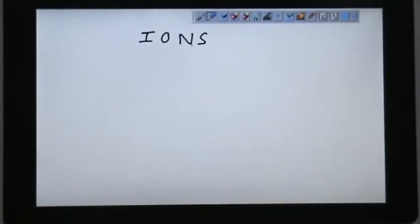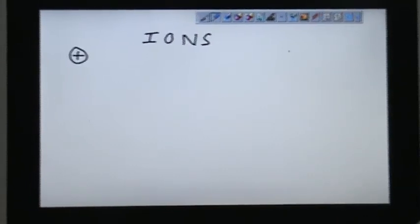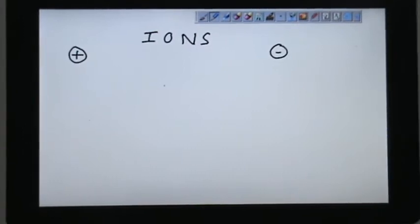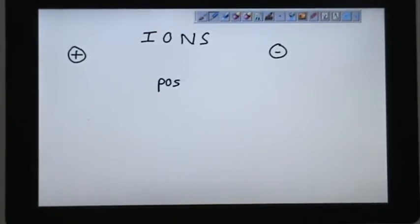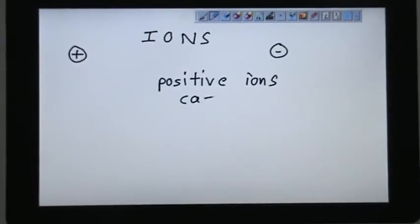Ions. We have two types of ions. One is positive ion and another one is negative ion. Let's consider positive ion first. Positive ions have a name. Their names are called cation.